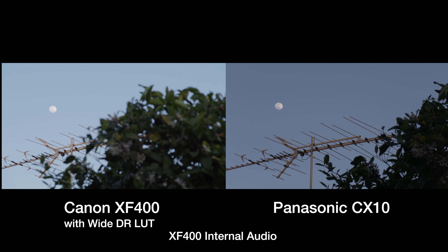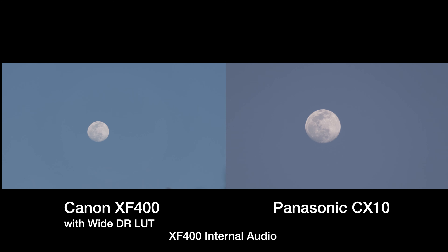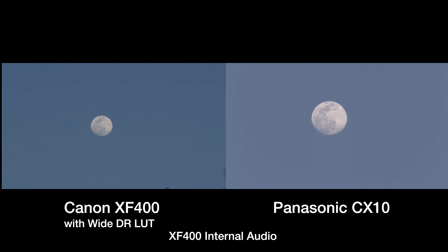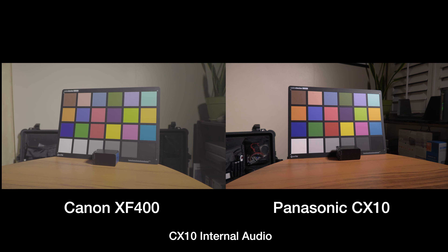Canon is set to F4.4, 160-ish shutter speed, 9 dBs of gain, ND at 1/16, and this is C-Log 3. Panasonic is at F4, 0 dBs of gain, ND at 1/16, Cine D. There's a bit too much silhouette in the Panasonic, so I'm going to decrease the ND filter to 1/4. The Panasonic is at 13 dBs of gain, F4, 422 10-bit, 150th shutter, 150 megabits, Cine D.